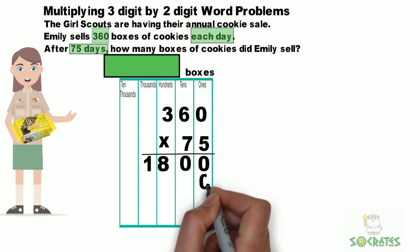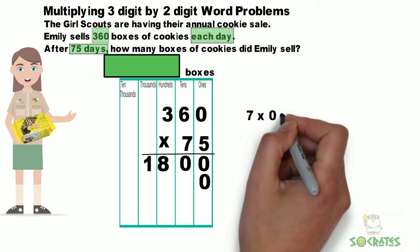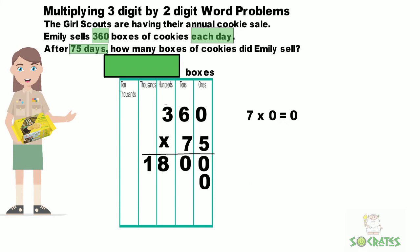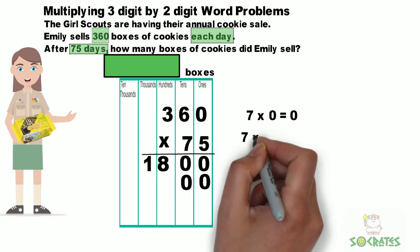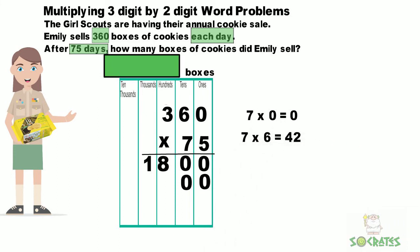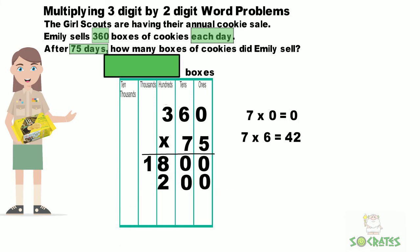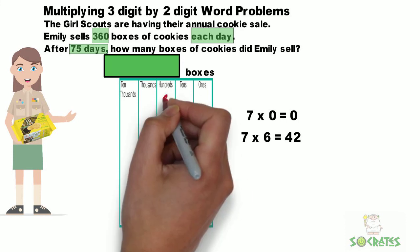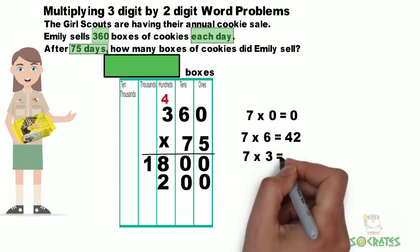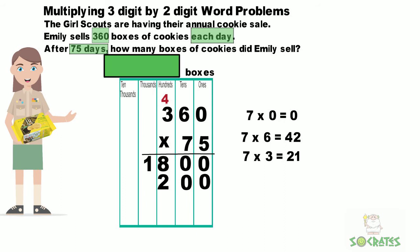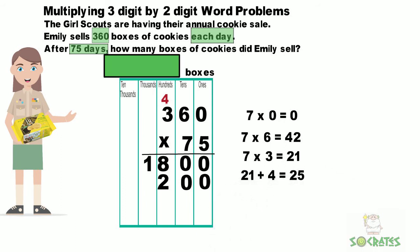Now let's multiply by the tens. We have to put a zero down in the ones place because we're multiplying by 70. Seven times zero equals zero. Next, seven times six equals 42 — put a two down and carry the four above the three in the hundreds place. Next, seven times three equals 21, and then we add the four to the 21 for a total of 25.